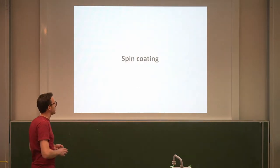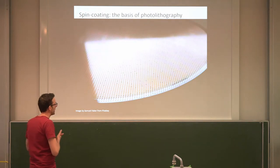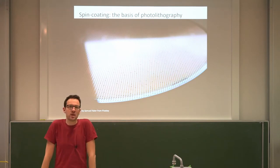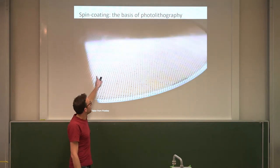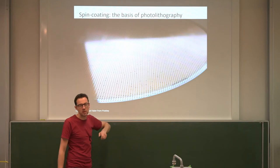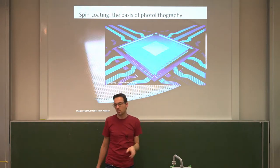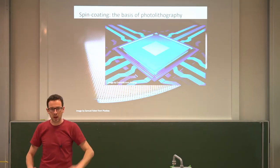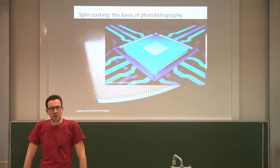I want to start with spin coating, which forms the basis of photolithography. Photolithography is a process used to structure the surface of a material — for example, a semiconductor such as silicon — and if it is, you can create computer chips. Here you see a complete wafer with very small chips being printed on it, and a CPU processor that powers smartphones, computers, and all kinds of devices.